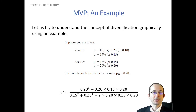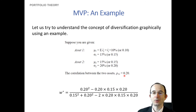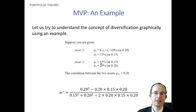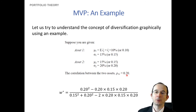Let's think about this more broadly, assuming a more realistic low but positive correlation between our two risk assets. Our first asset has an expected return of 10% and a standard deviation of 15%. Our second asset has an expected return of 15% and a standard deviation of 20%, and they are weakly positively correlated with each other.